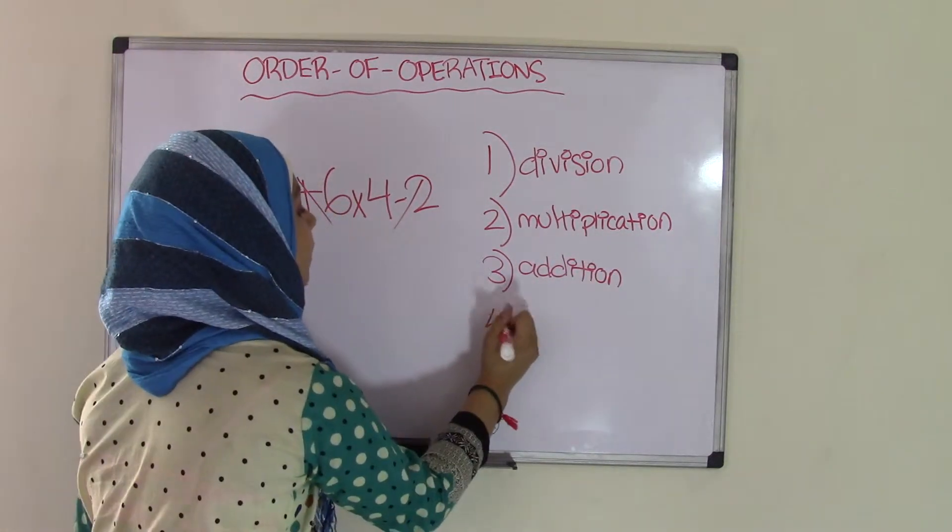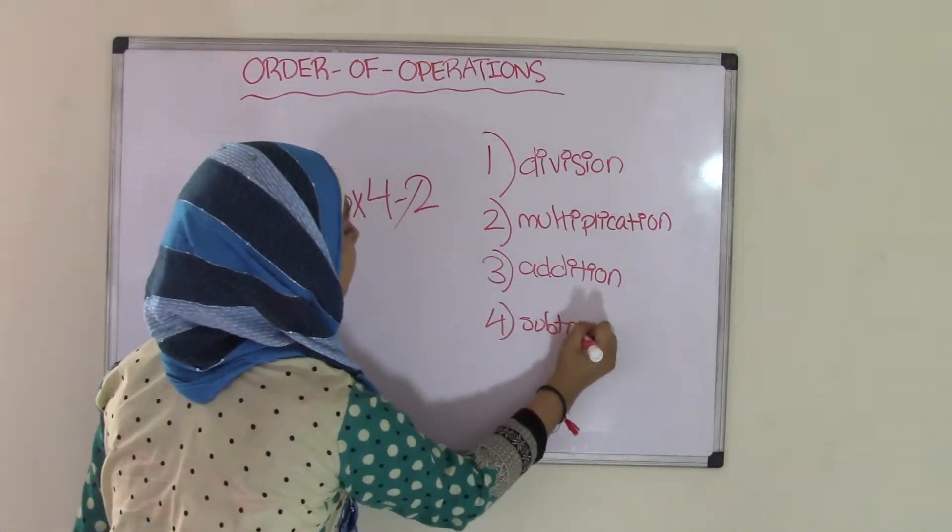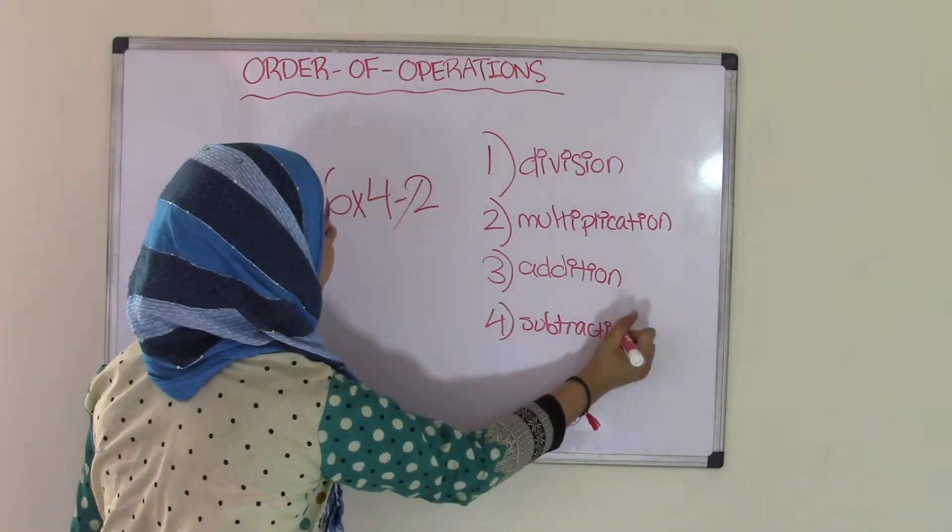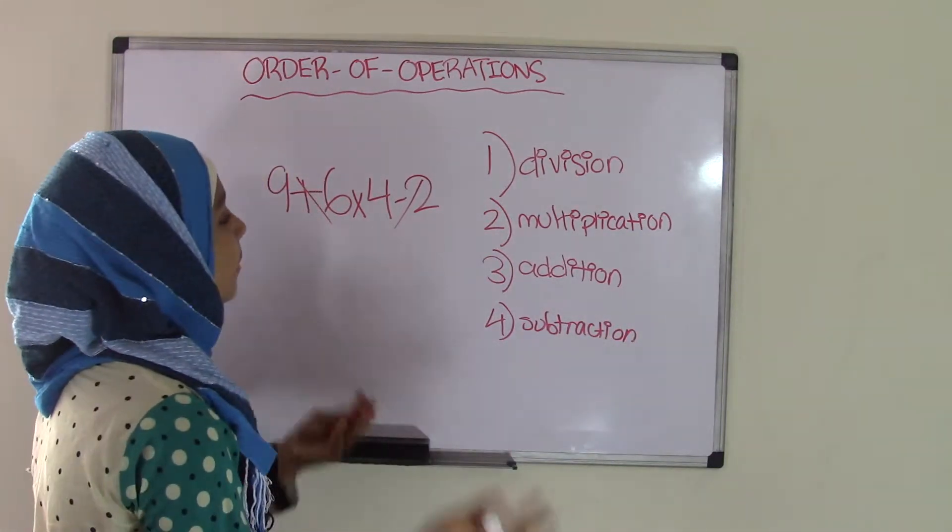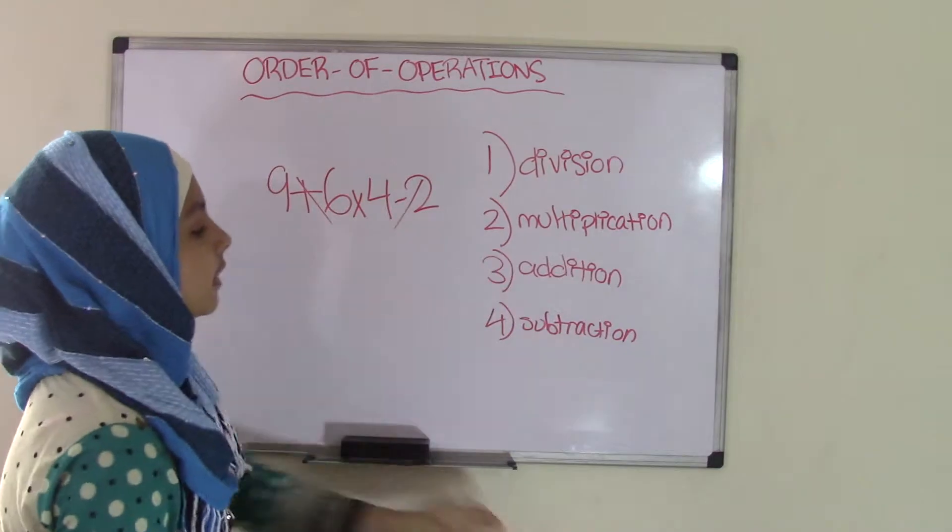And last but not least, your fourth basic operation is subtraction. Now I know these are some basic things that you probably learn in first or second grade, but these are used in our everyday lives. So order of operations is based on these four operations.